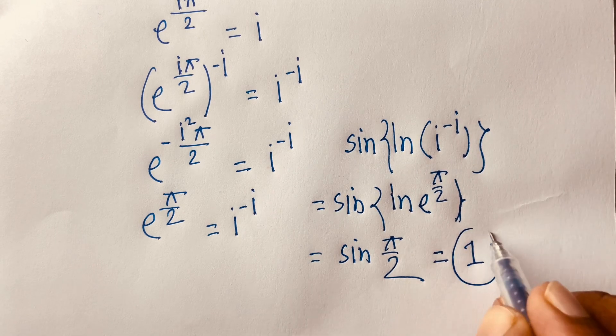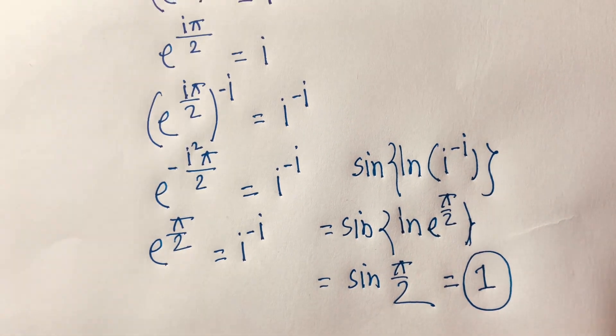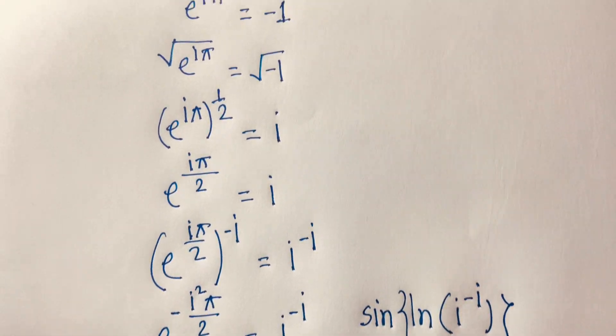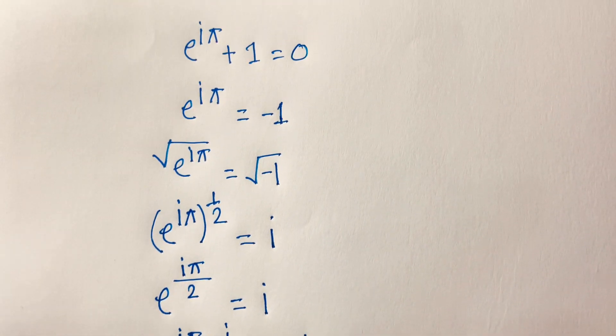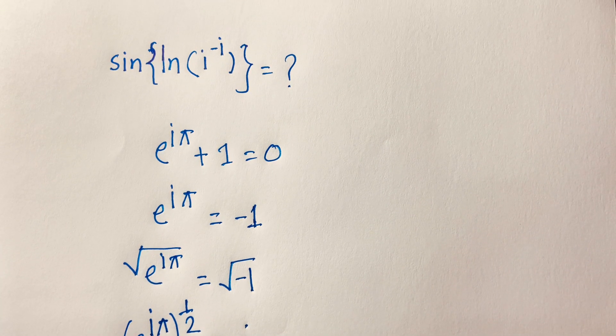So sin(pi over 2) equals 1. Our final answer is one. Thank you all — if you enjoyed this video, please subscribe to my channel and like this video. Goodbye.